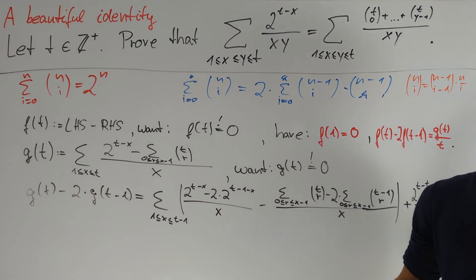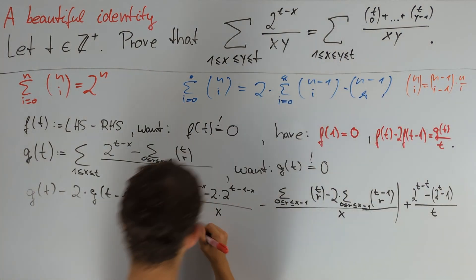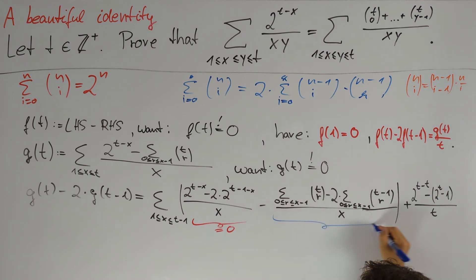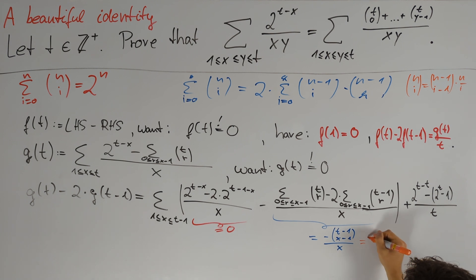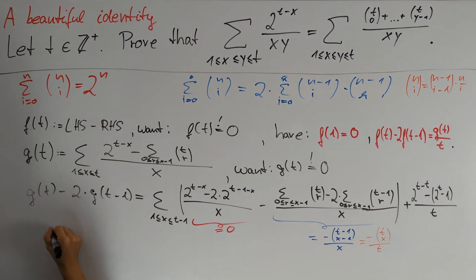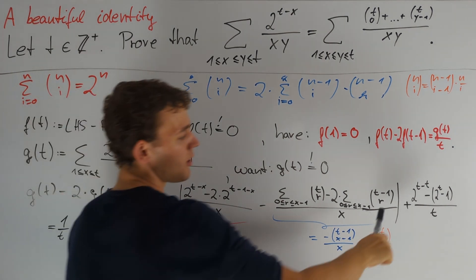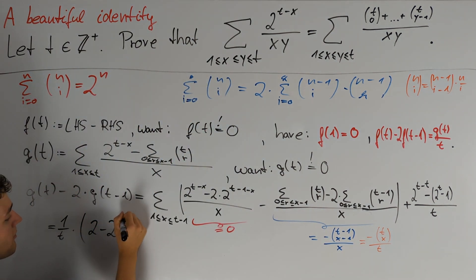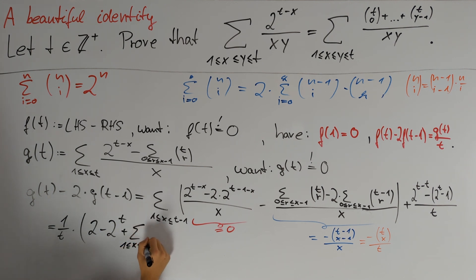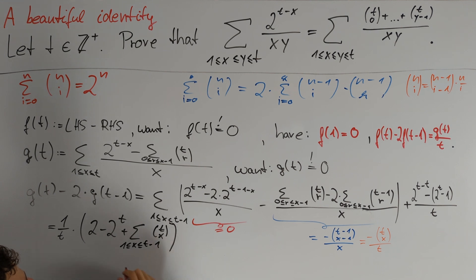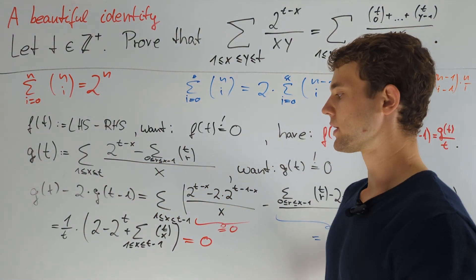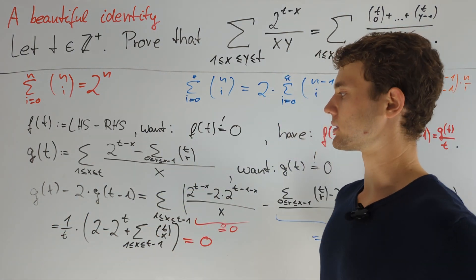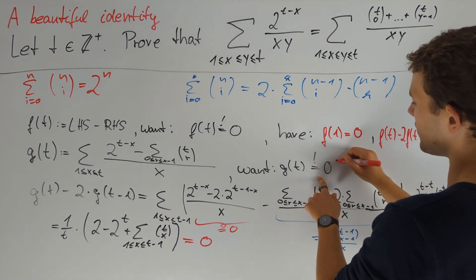For the first t−1 terms we also get some cancellation: that term equals 0. Our blue identity tells us the value of this difference is minus (t−1 choose x−1) divided by x, and the orange identity gives us minus (t choose x) divided by t. This equals 1/t times (1 + 1 − 2^t) plus the sum over 1 ≤ x ≤ t−1 of (t choose x). Since 2 = (t choose 0) + (t choose t), all of this equals 0 by our red identity. We can see that g(1) = 1 − 1/1 = 0. Together with g(t) = 2g(t−1), we conclude by induction that g(t) always equals 0, and therefore we are done.